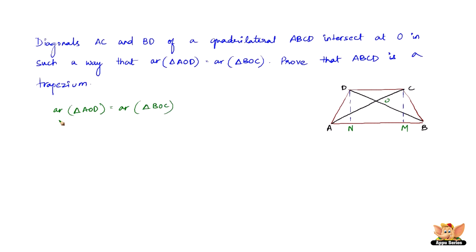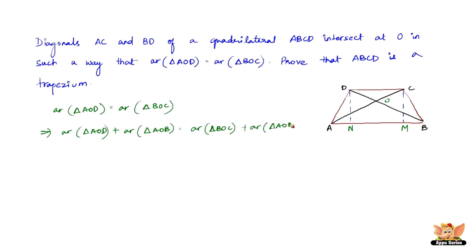We need to prove that ABCD is a trapezium. We are going to add the area of triangle AOB to both sides of the given equation, which gives us: area of triangle AOD plus area of triangle AOB equals area of triangle BOC plus area of triangle AOB. This gives area of triangle ABD equals area of triangle ABC.